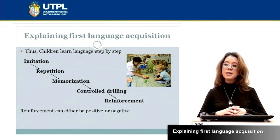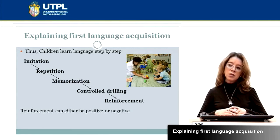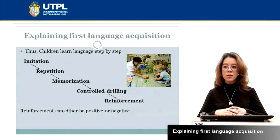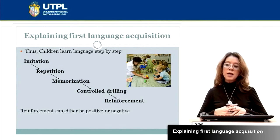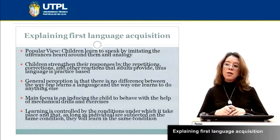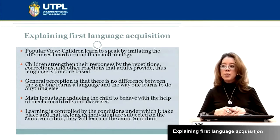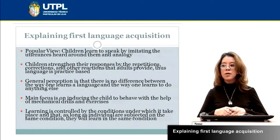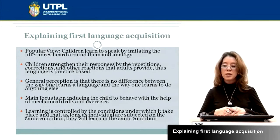Here is the step-by-step of first language acquisition in the behaviorist perspective: imitation, repetition, memorization, controlled practice and reinforcement. The reinforcement can be positive or negative. The popular view of this theory is that children learn to speak by imitating utterances heard around them and by analogy. Children strengthen their responses through repetitions, corrections and other reactions that adults provide.